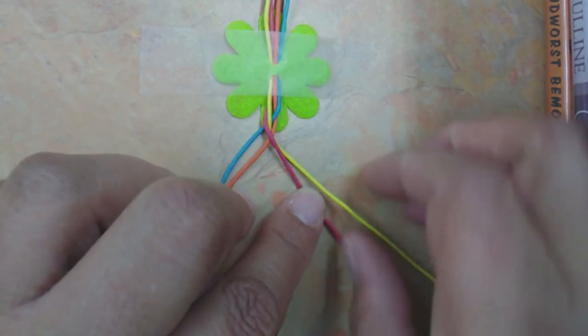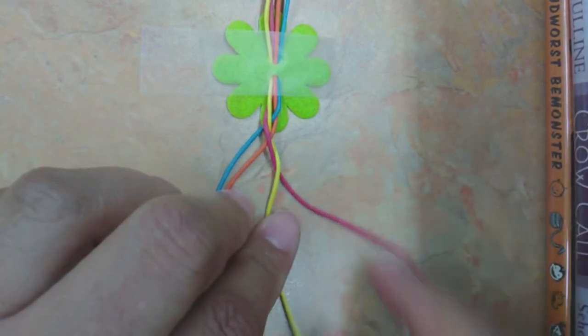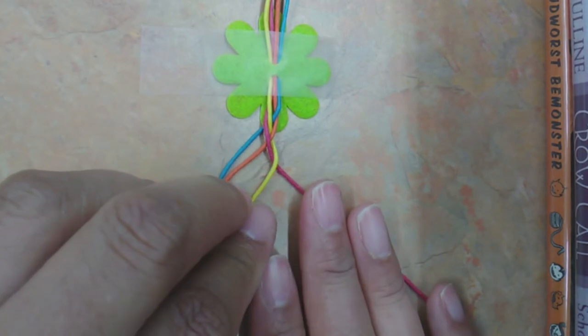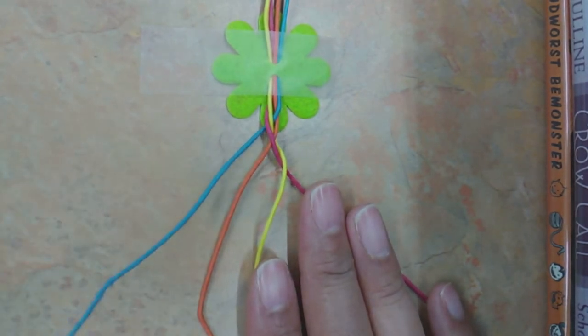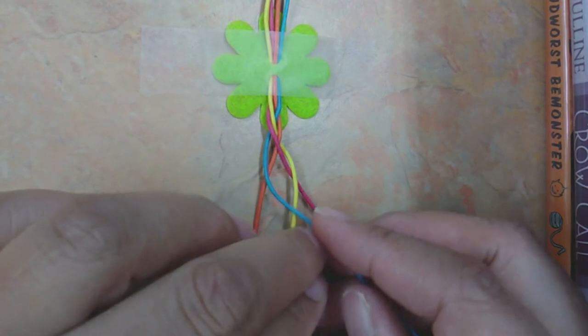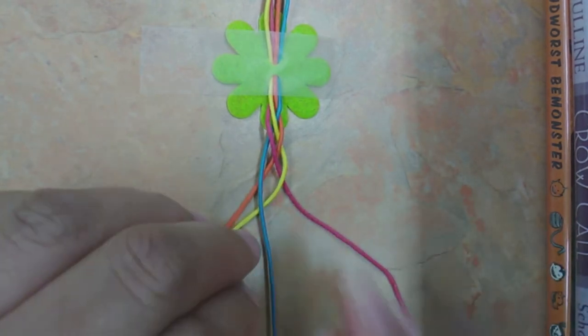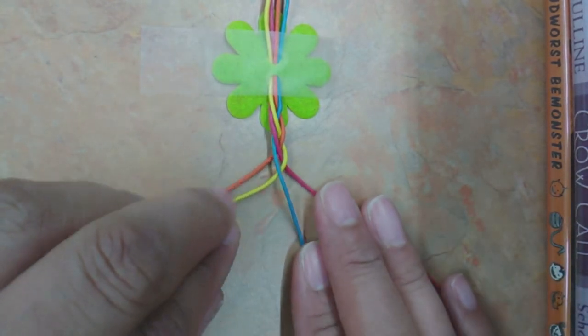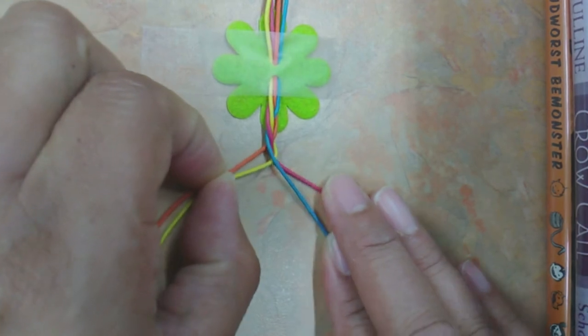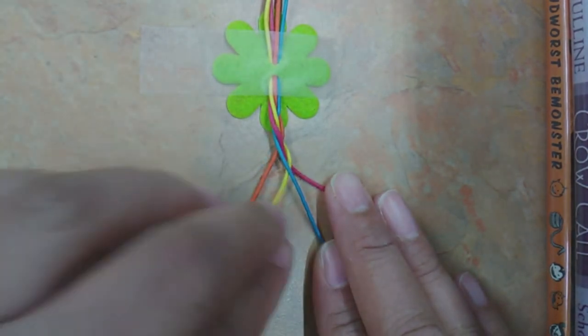This will be your pattern. Just continue to do this until you feel the braid is long enough, then you can knot it on the end and begin braiding the other side. You can pull them up a little bit like this so that it tightens up.